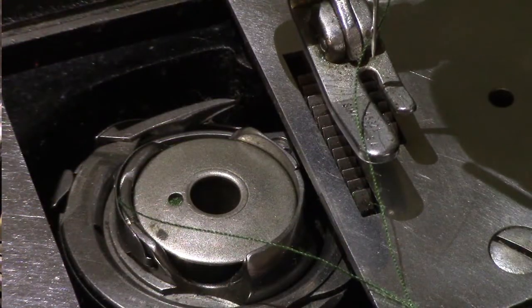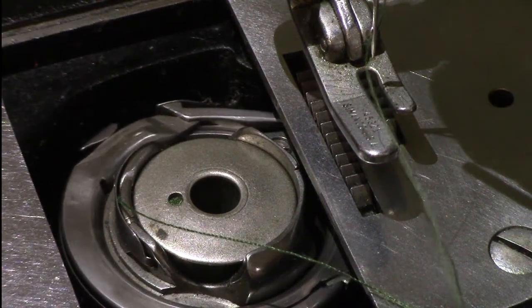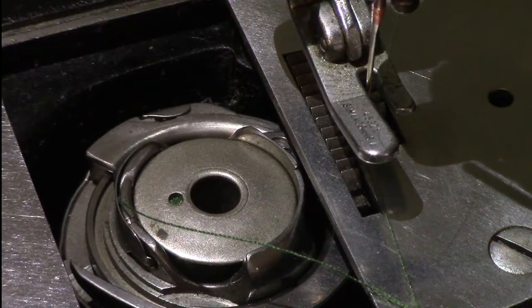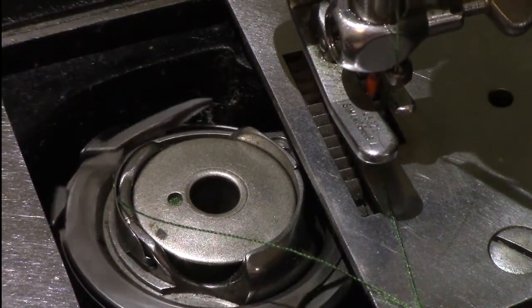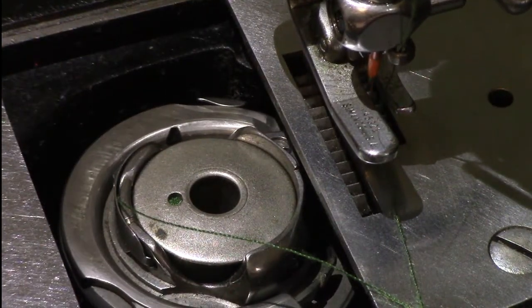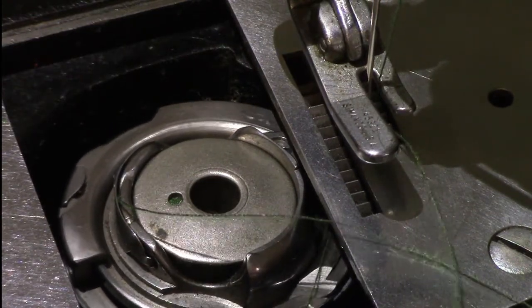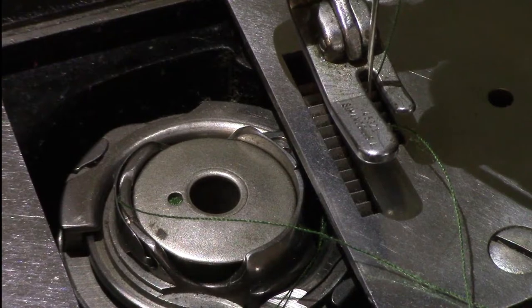But back to the 201-2, the outer shuttle hook, which rotates around the bobbin, comes around, grabs the needle thread, relaying it around the bobbin, locking around the bobbin thread, and forming the lock stitch.